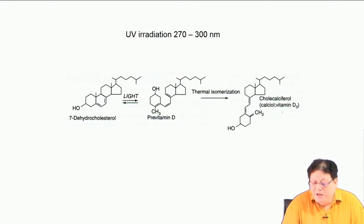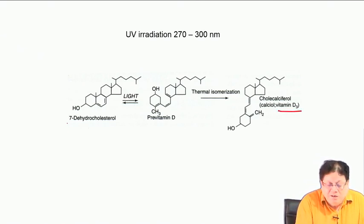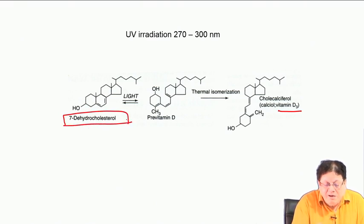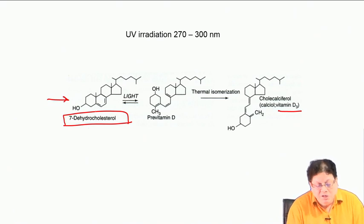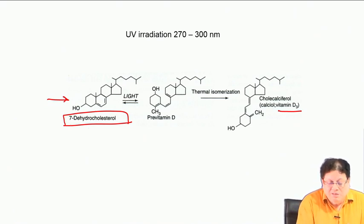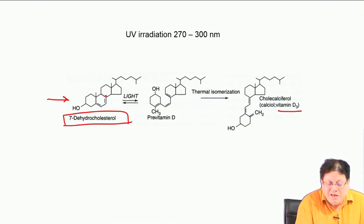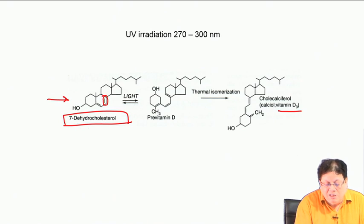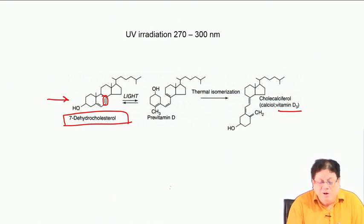Vitamin D3 is obtained from the well-known substrate 7-dehydrocholesterol — which has an extra double bond at position 7 (1, 2, 3, 4, 5, 6, 7 — the extra double bond is there). Otherwise cholesterol has a saturated framework. This 7-dehydrocholesterol has a 6-membered ring with a diene framework.